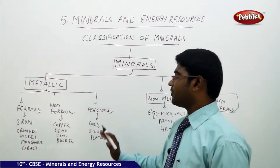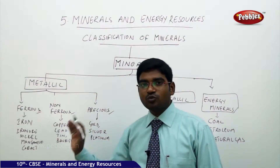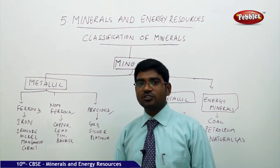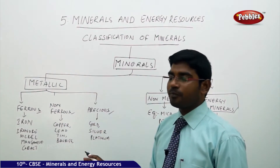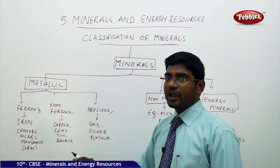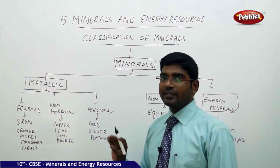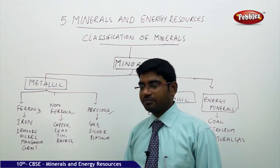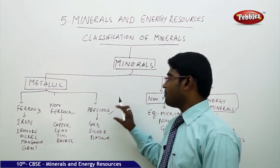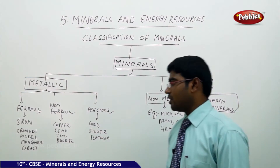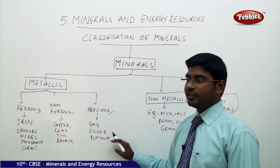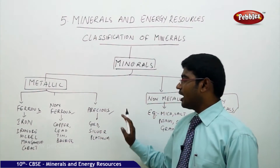The non-ferrous group includes minerals where there is no influence of iron — such as copper, lead, tin, and bauxite. Moving on to the third category of metallic minerals: precious minerals. These include gold, silver, and platinum, where the influence of iron is also absent.